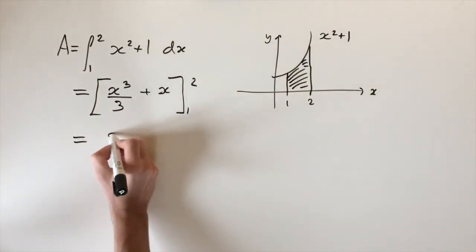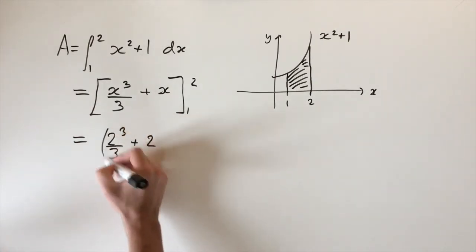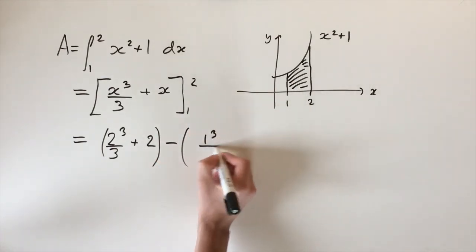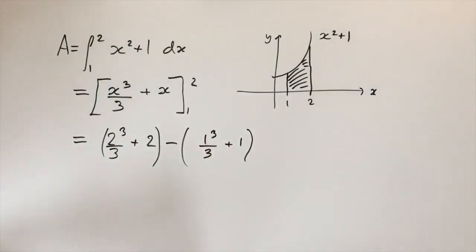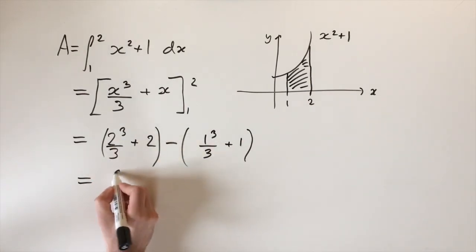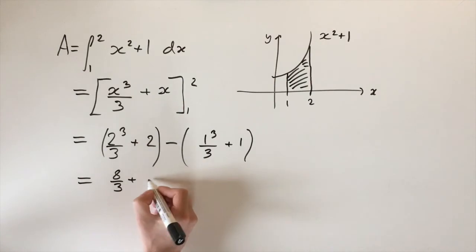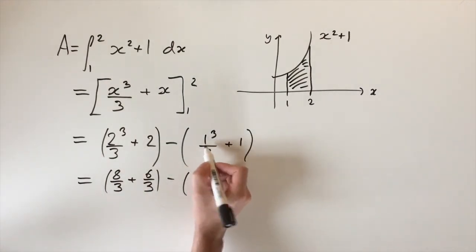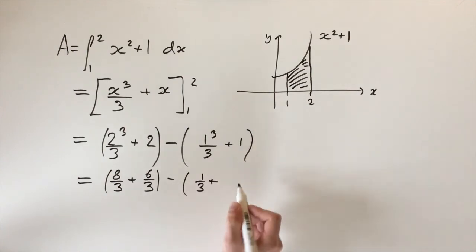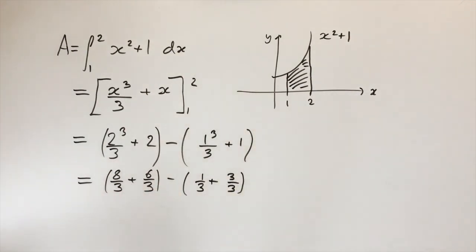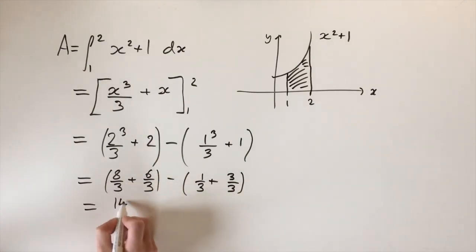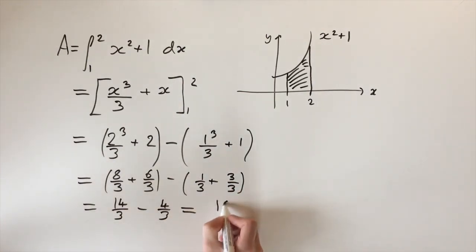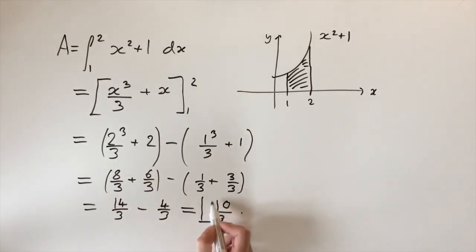Starting with the upper limit: 2 cubed divided by 3 plus 2, and subtracting the lower limit: 1 cubed divided by 3 plus 1. Simplifying: 2 cubed is 8, so we have 8 over 3 plus 2. Writing 2 as 6 over 3 so the fractions have the same denominator, that's the first term. The second term is 1 over 3, and writing 1 as 3 over 3. Adding the first group: 8 plus 6 is 14 over 3. The second is 4 over 3. So our answer is 10 divided by 3. This is the area under the curve between limits 1 and 2.